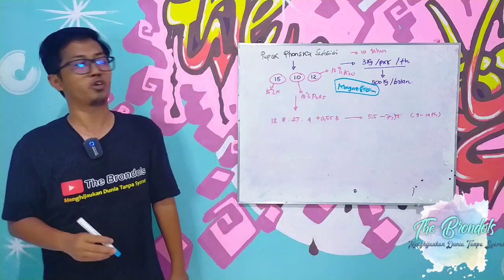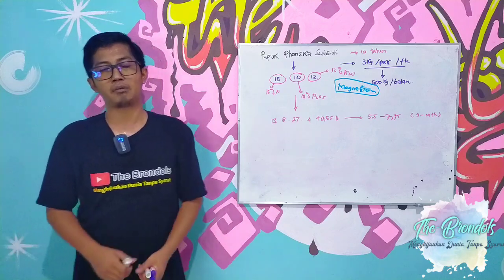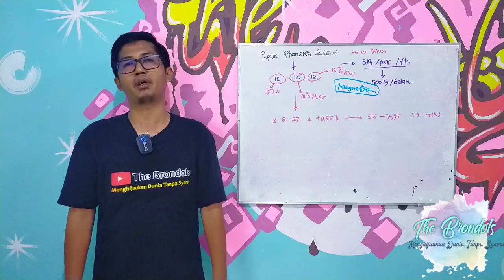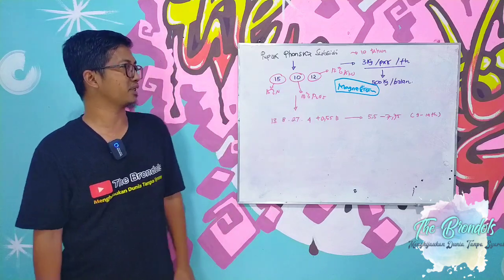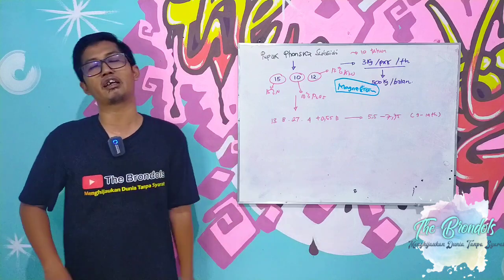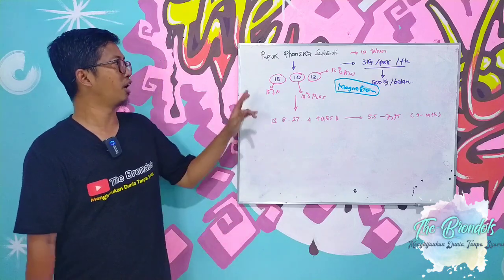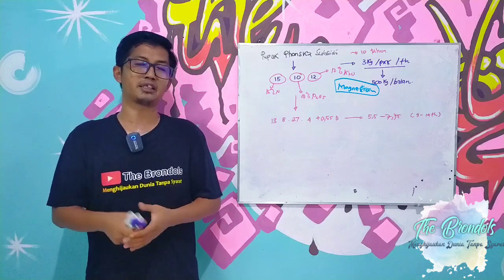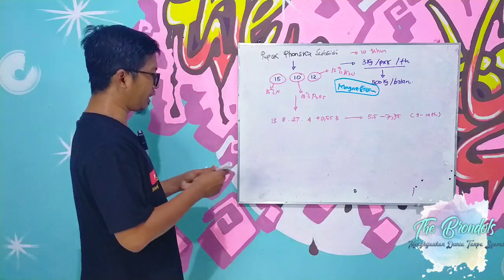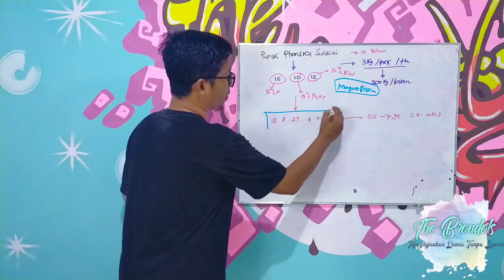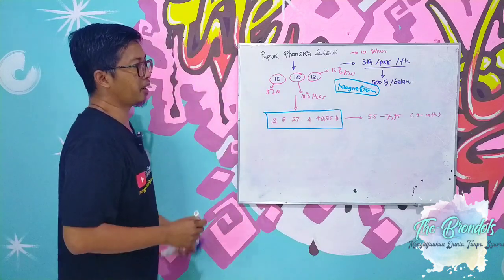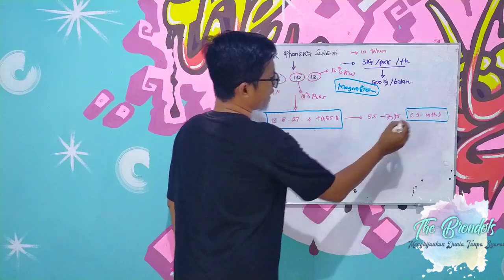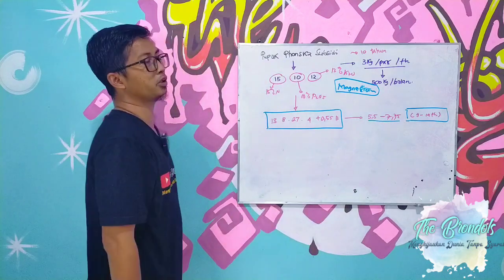So what concrete steps must be taken by this farmer? If we go back to the recommendations for producing plants, the recommended NPK fertilizer is 13-8-27-4 plus 0.65 boron, where at the recommended age of 4 to 14 years it's 5.5 to 7.75 kg.